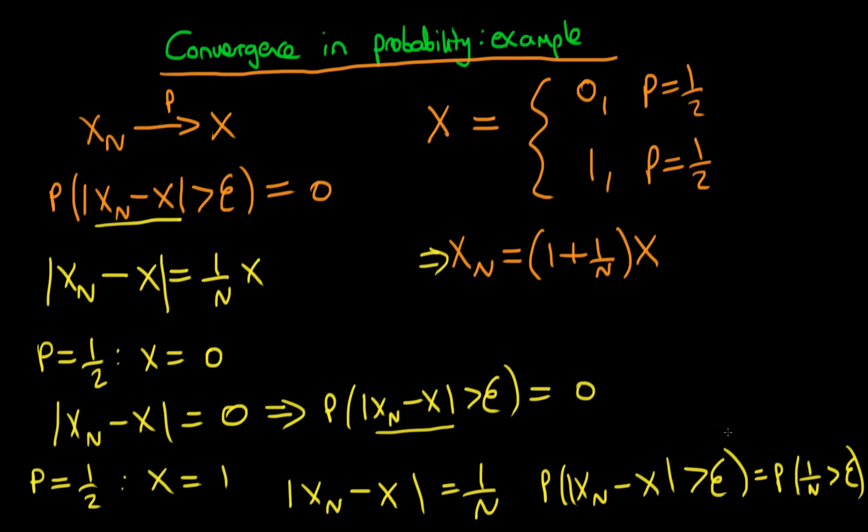...is equal to the probability that one over n is greater than ε. Another way of writing this probability within the parenthesis here is that it's the same as the probability that n is less than one over ε. But because we know that n is infinite, there's no way it can be less than an amount one over ε, no matter how big that amount is. So we actually have that this is equal to zero as well.